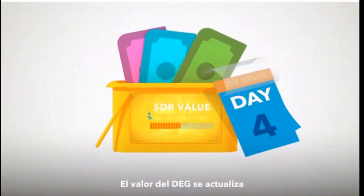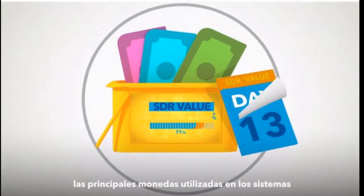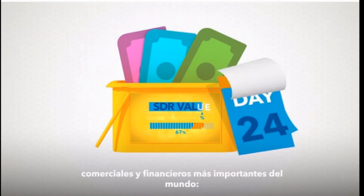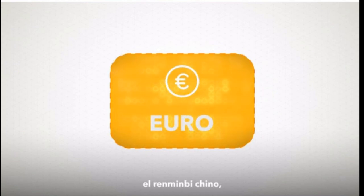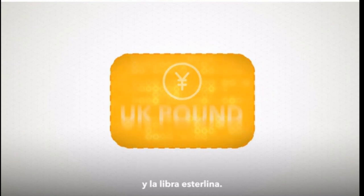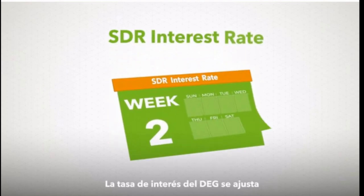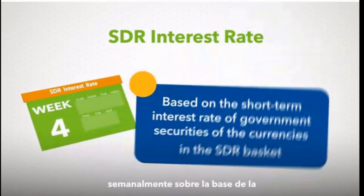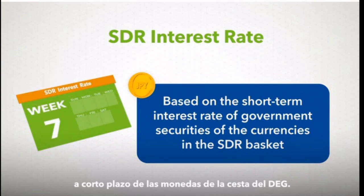The value of the SDR is updated daily and defined by a basket of major currencies used in the world's most important trading and financial systems: the US dollar, the euro, the Chinese renminbi, the Japanese yen, and the UK pound sterling. The SDR's interest rate is adjusted weekly based on the short-term interest rate of government securities of the currencies in the SDR basket.